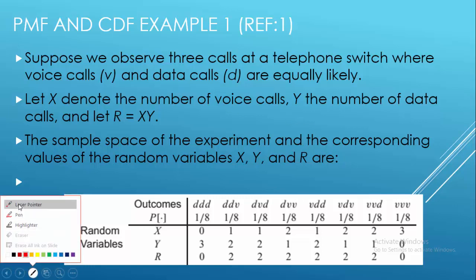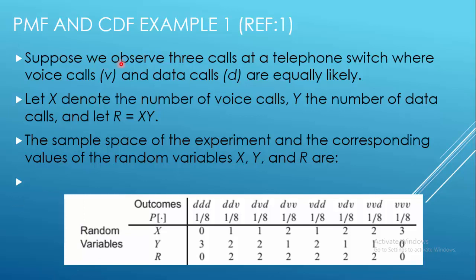Suppose we observe three calls at a telephone switch where voice calls and data calls are equally likely. Let X denote the number of voice calls, Y the number of data calls, and let R be the multiplication of X and Y. The sample space of the experiment and the corresponding values of the random variables are given over here.